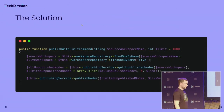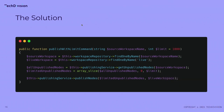Our solution for this problem: we built a custom publishing command to avoid this issue. Here is a dummy implementation of how something like that might look. It's fairly simple — we get the source workspace, the target workspace (in this case the live workspace), and we get all of the unpublished nodes for the source workspace. Then we simply split this array by a limit which we can provide to the function. With that, you can avoid the scaling issues of larger publishing commands.